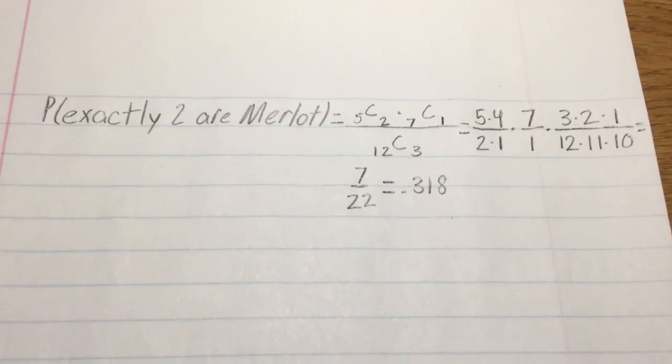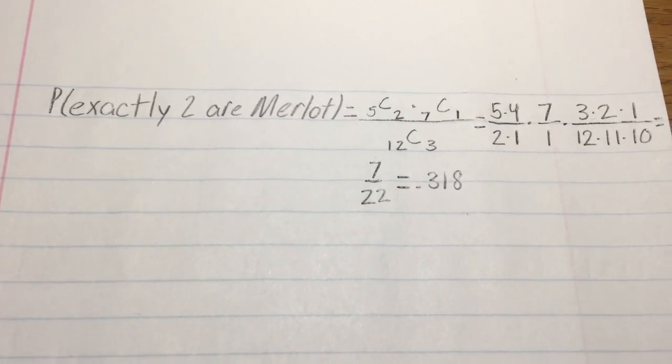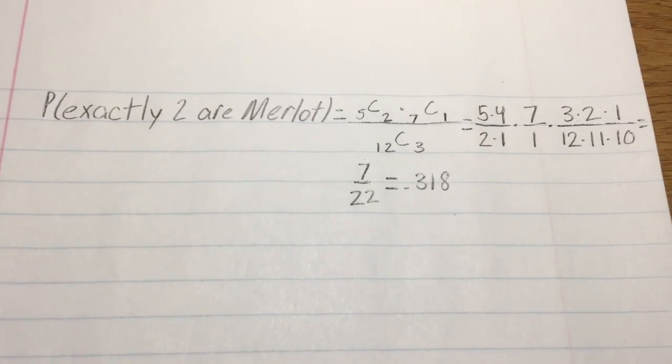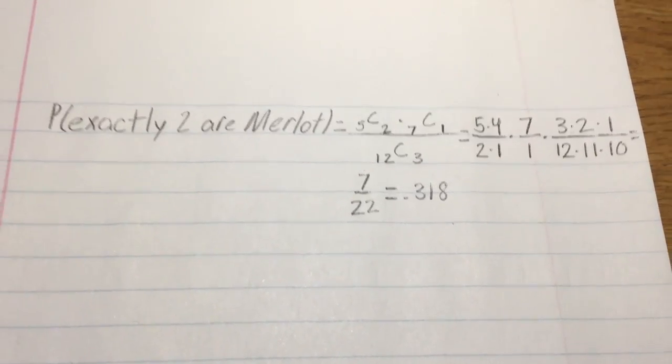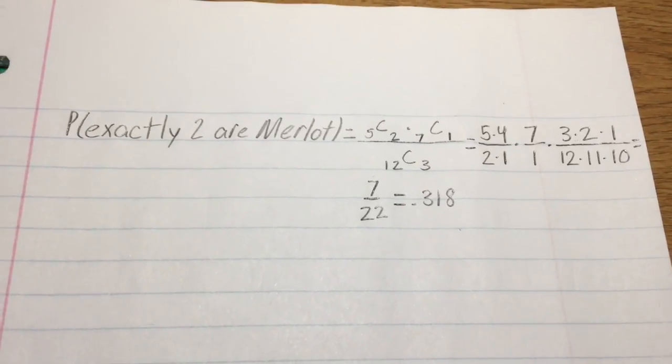Okay, so for exam 1, question 3, part B, the question asks that of the three randomly selected wine bottles, what is the probability that exactly two are Merlot?